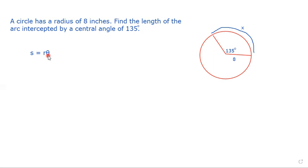We need our theta in radians, but it's given to us in degrees. So this is what we have. A circle has a radius of eight inches. We want to find the length of the arc intercepted by a central angle of 135.